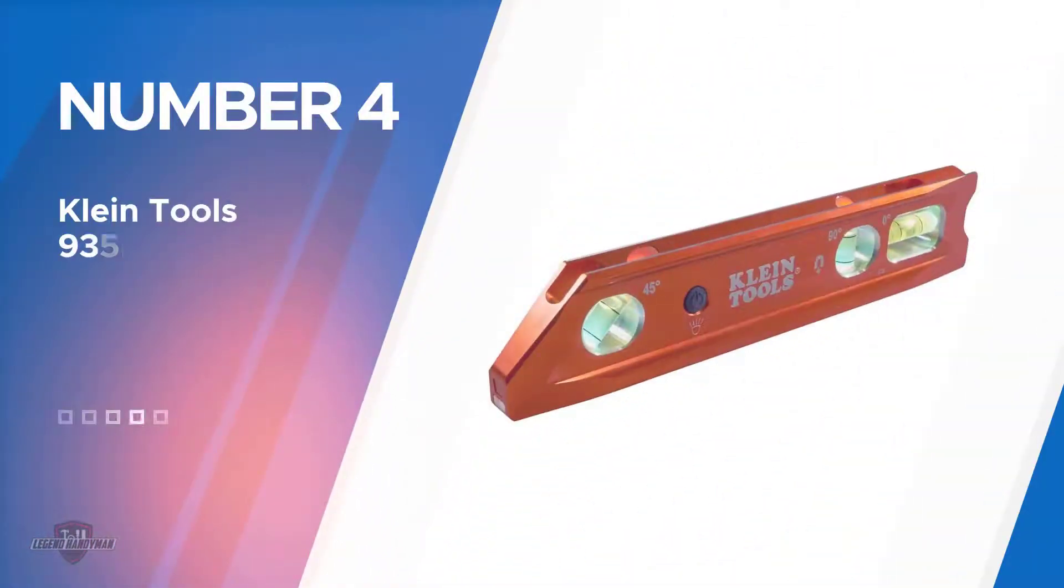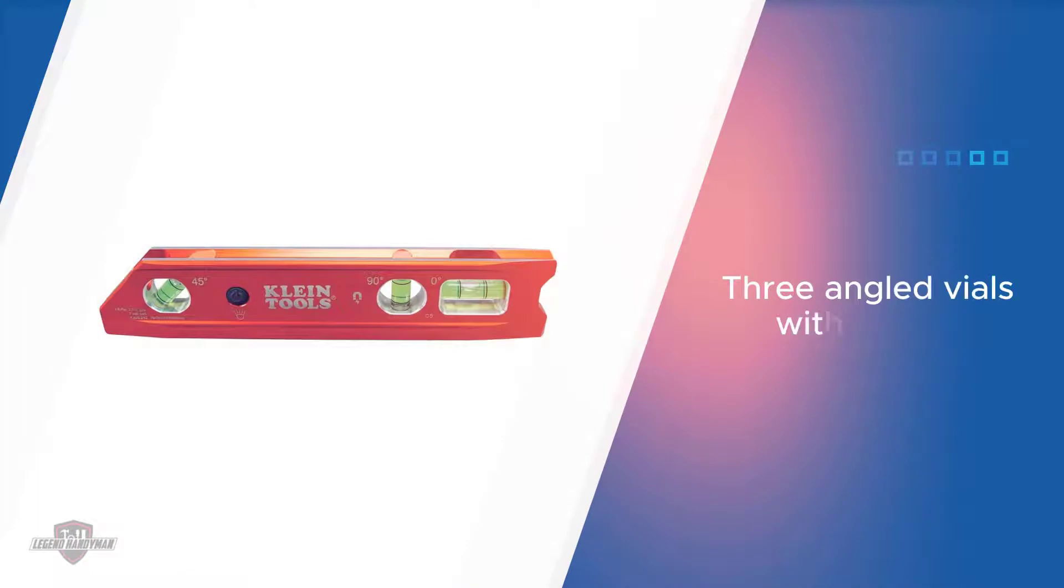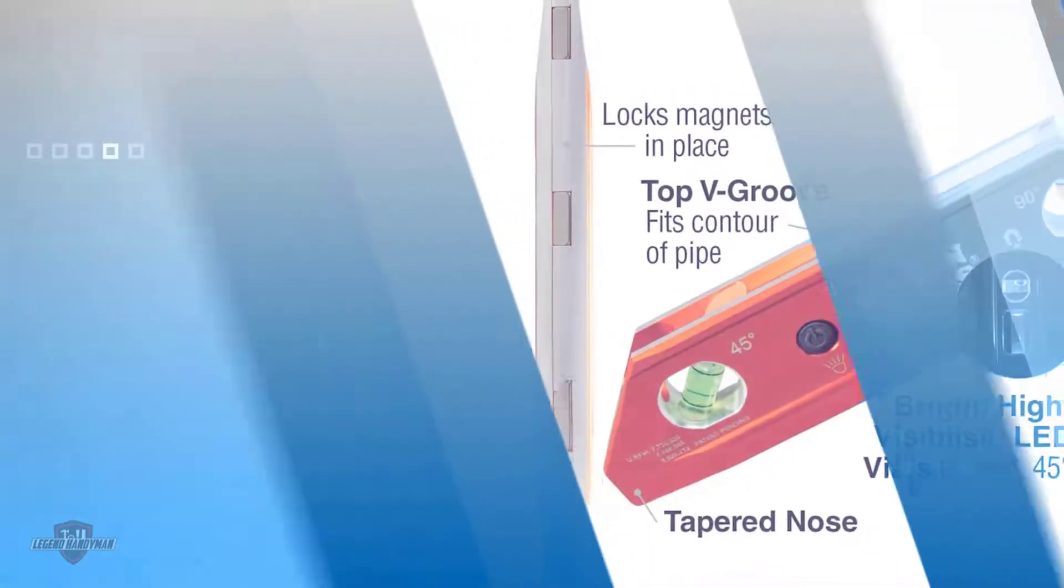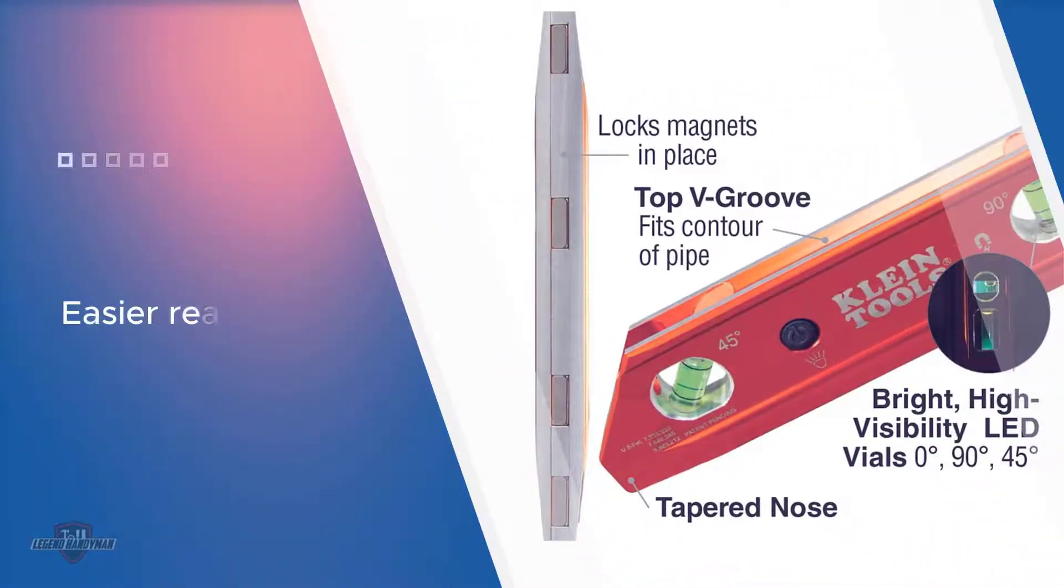Number four: Klein Tools 935RBL Torpedo Level. The tool saves a lot of your time. One side of the vial is a feature that is wide and preferred for easy visibility.